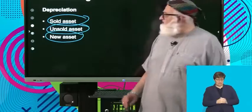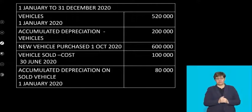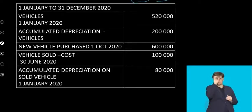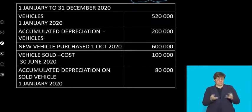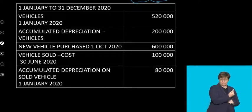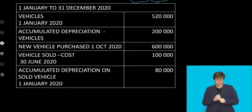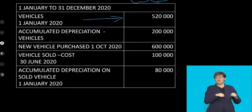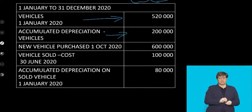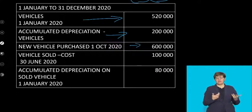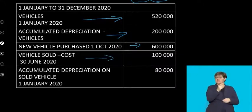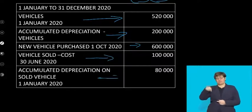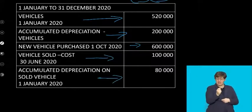Let me illustrate by means of an example. Depreciation is at 20% per annum on the diminishing or reducing balance method. The financial year runs from January 1st to December 31st. At the beginning of the year, vehicles are valued at R520,000 and accumulated depreciation is R200,000. A new vehicle was purchased on October 1st, 2020 for R600,000. The vehicle sold on June 30th had a cost price of R100,000 and accumulated depreciation of R80,000.